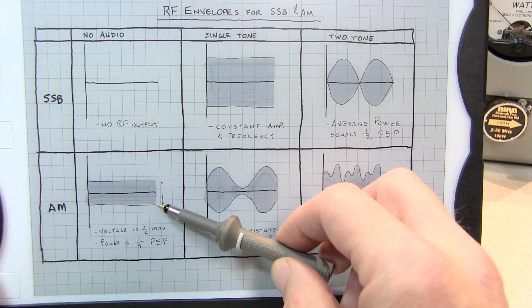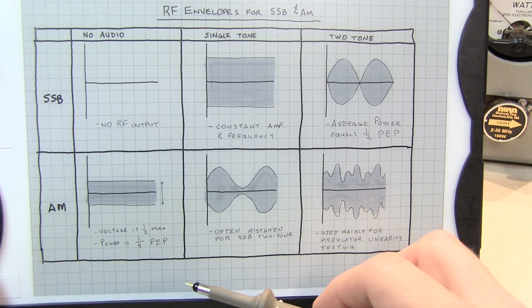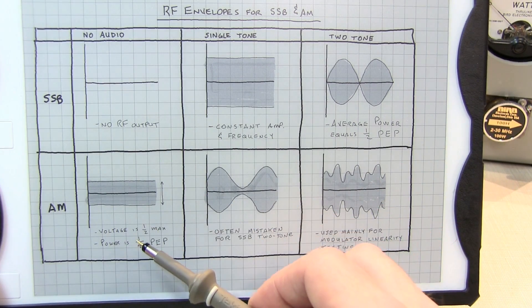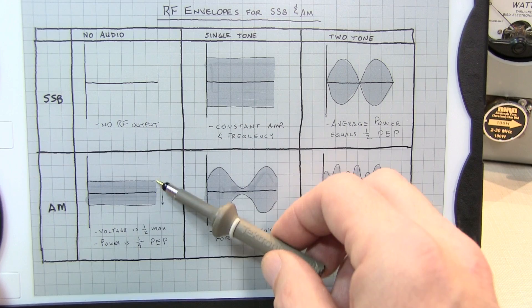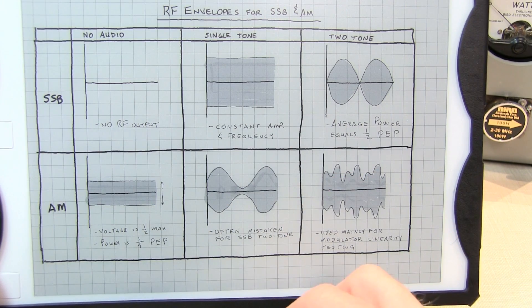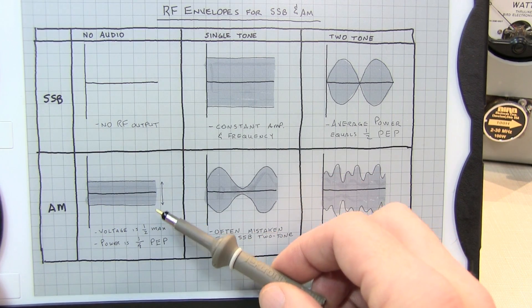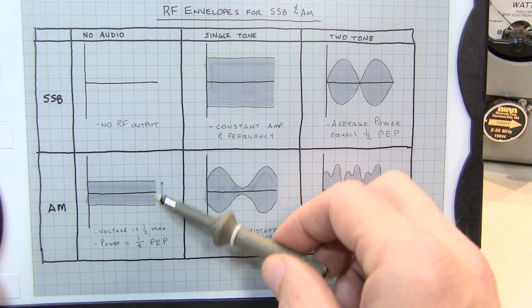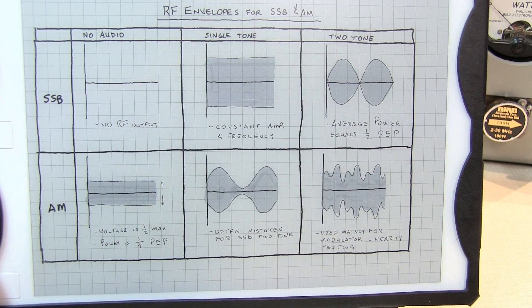So the ideal AM carrier magnitude is one half the voltage that occurs at peak to peak, which means it's one quarter of the power that occurs at the peak envelope power. So for a 100 watt transmitter, the ideal carrier amplitude would be 25 watts. For a 1500 watt AM signal, the ideal carrier would be 375 watts.